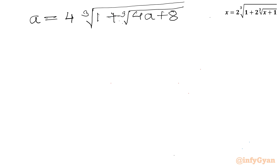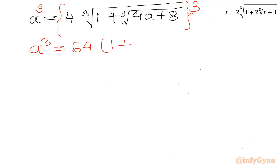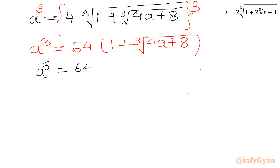Now I will consider cubing both sides — power 3 on this side and also power 3 on the other side. So I can write a cubed equal to 4 cubed, which is 64, in bracket 1 plus cube root of 4a plus 8. Now I can expand this further with 4a plus 8.